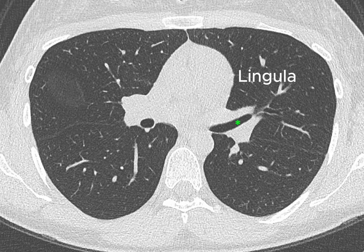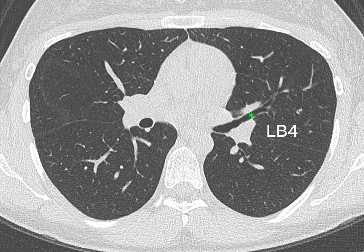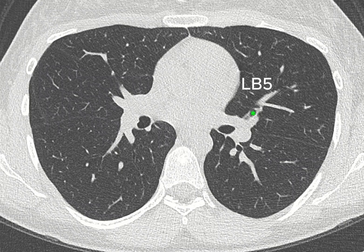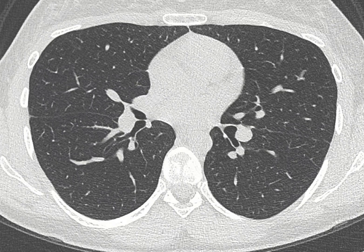As we travel into the lingula, it can get a bit tricky — it's easy to get it wrong because it doesn't have a lateral bifurcation like the medial and lateral branches of the middle lobe. It has a superior branch, the LB4, and an inferior branch, the LB5. The first segment we see entering the left lower lobe bronchus is the LB6, which is very comparable to the number 6 on the right side. Because they have a very dorsal direction, they are great orientation points during bronchoscopy.